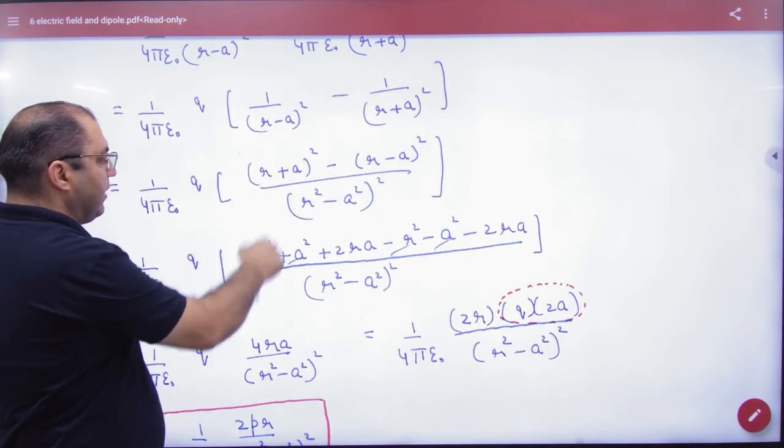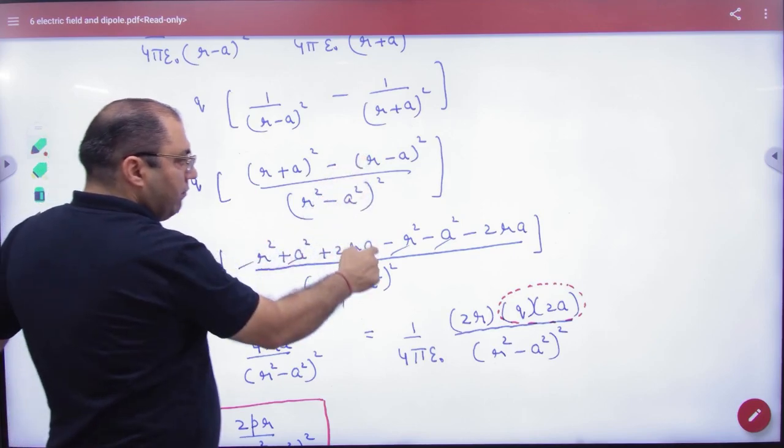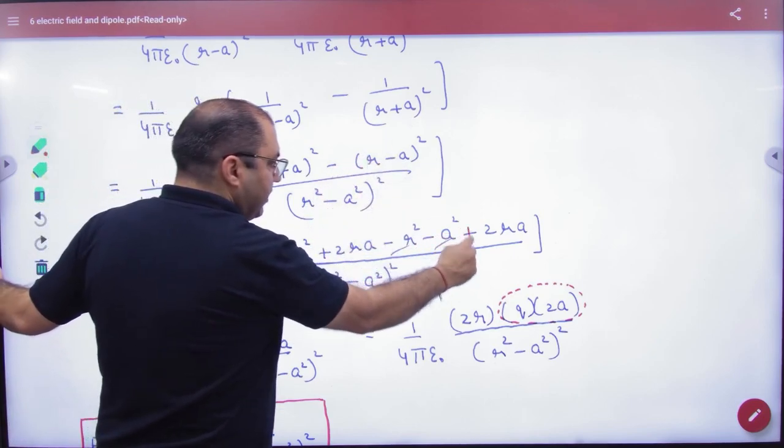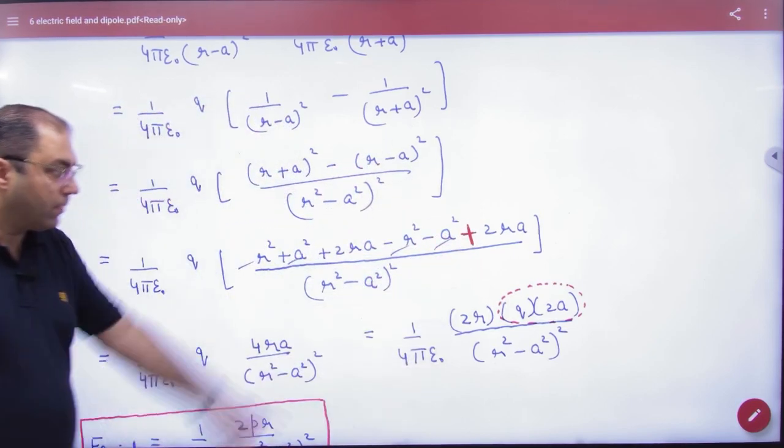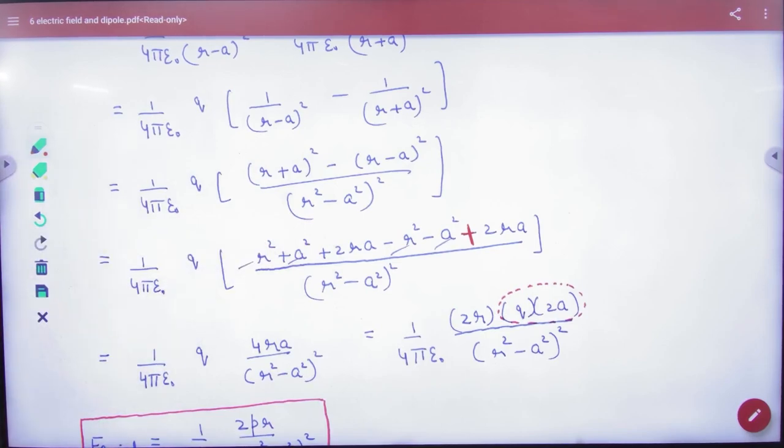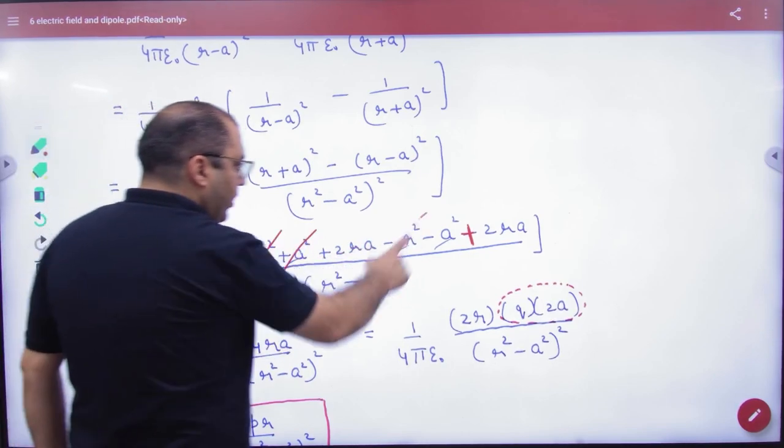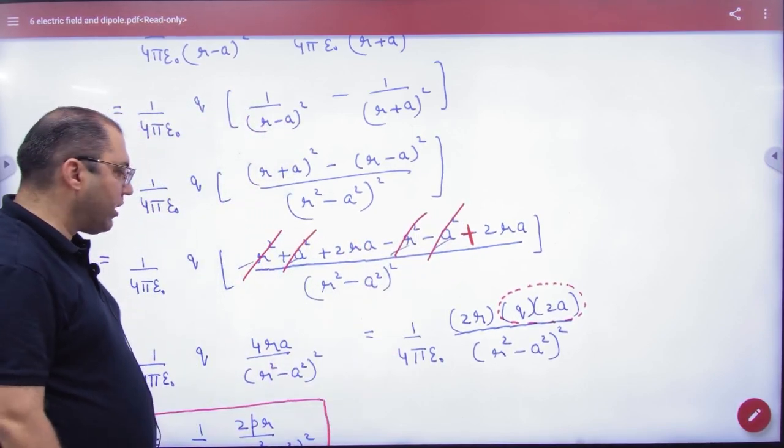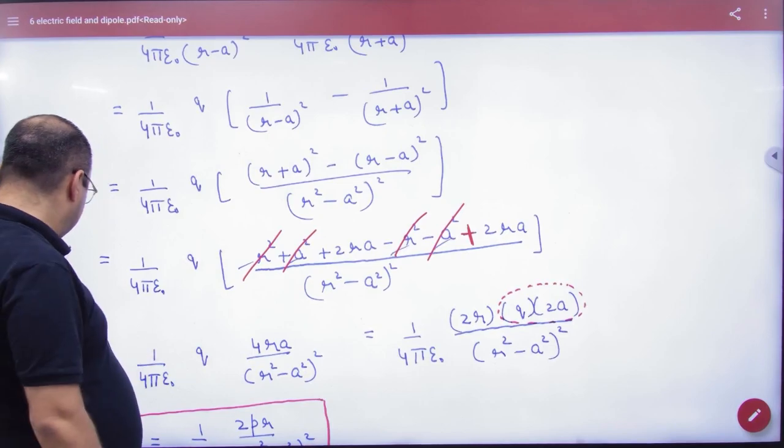We will open it using (a + b)² = a² + b² + 2ab. So (r + a)² = r² + a² + 2ra. And (r - a)² = r² + a² - 2ra. When we open it, r² and a² terms cancel. So what will be left? 4ra in the numerator. So we get 4ra.